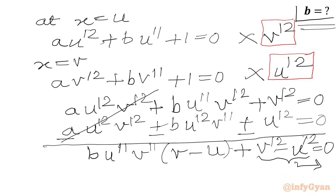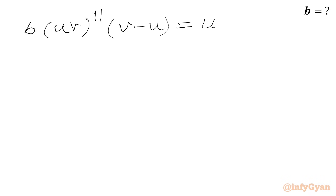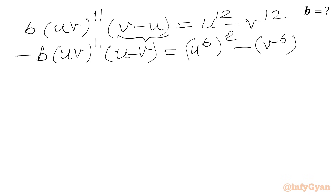Moving terms to the right-hand side: b·(uv)¹¹·(v − u) = u¹² − v¹². Taking negative one common from the left side gives: −b·(uv)¹¹·(u − v) = u¹² − v¹². We can write u¹² − v¹² as (u⁶)² − (v⁶)², applying the difference of two squares formula: (u⁶ + v⁶)(u⁶ − v⁶).